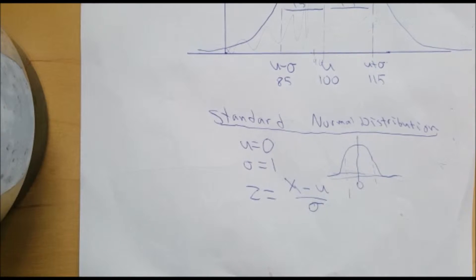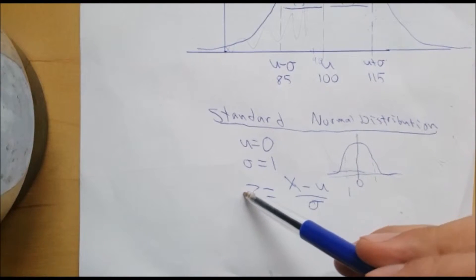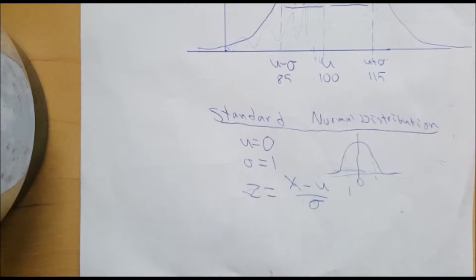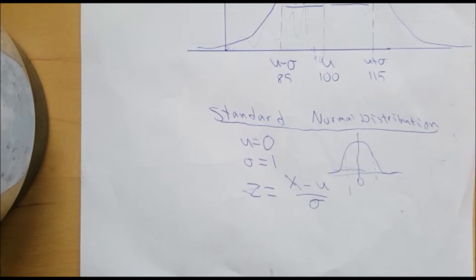And by the way, the Z is just a sign for standard normal for this curve.